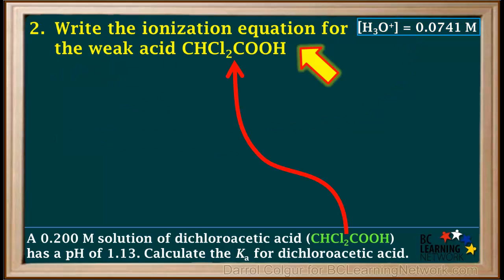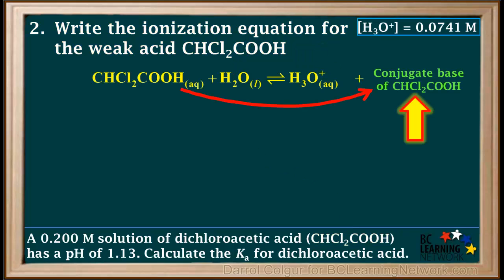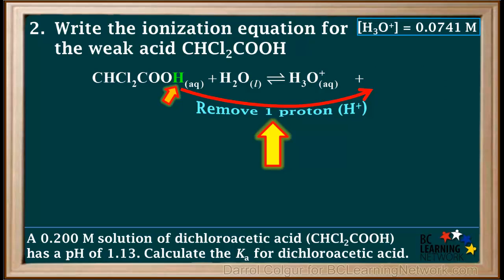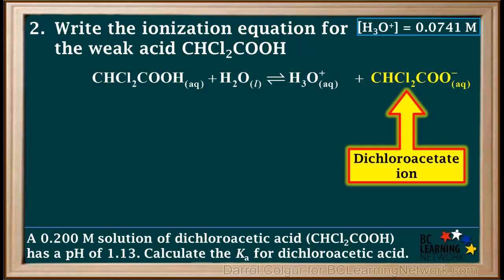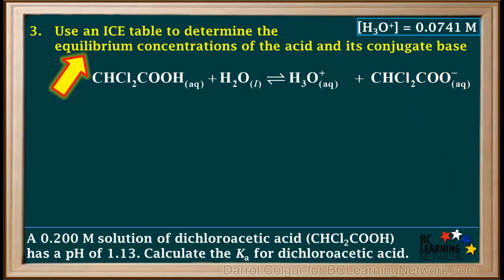The second step is to write the ionization equation for the weak acid CHCl2COOH. To write the ionization equation, we add water to the acid, and on the product side we write H3O+ and the conjugate base of the weak acid. The formula for the conjugate base is obtained by removing a proton, or one H, and one positive charge from the acid. This gives us CHCl2COO minus, which is called the dichloroacetate ion.